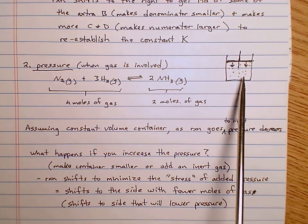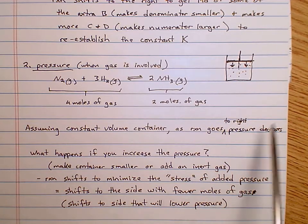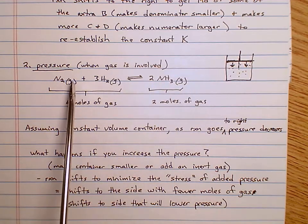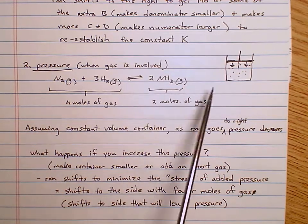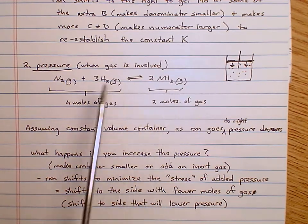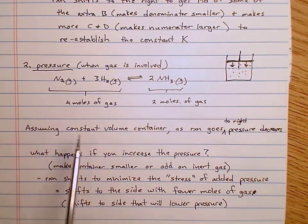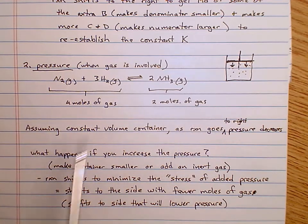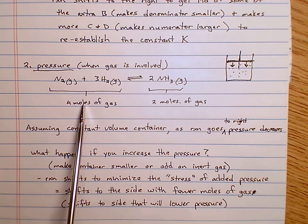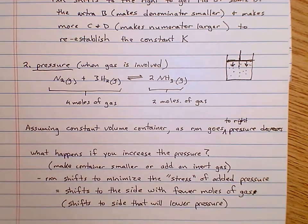The two main ways of increasing pressure are: make the volume of the container smaller using a variable volume container, or add an inert gas like helium or argon. Note that you have to look at which side has more moles of gas — adding pressure moves the equilibrium away from the side with more moles. If reactants have more moles of gas, adding pressure makes more product; if the product side has more moles, adding pressure makes more reactants.